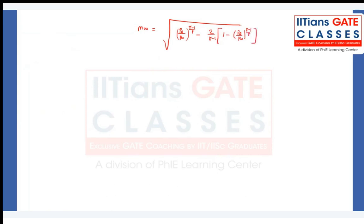Plugging in PA/P∞ = 0.8 and γ=1.4, you get M∞ = 0.793. This is the fundamental approach starting from energy balance and using isentropic relations. It's a bit lengthier but we're not making any assumptions beyond what's given.